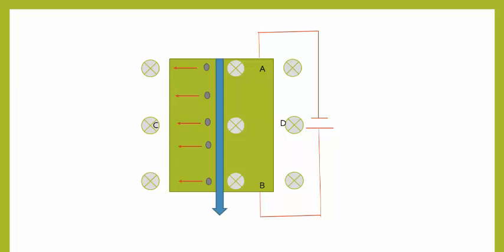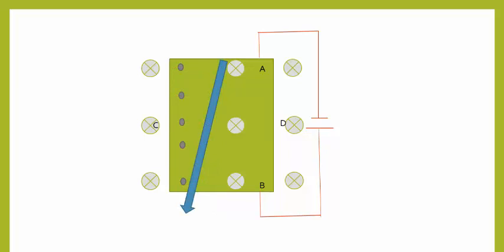The magnetic force on these electrons pushes them towards side C. These arrows represent the direction of magnetic force on these electrons. As a result of this magnetic force, these electrons will start accumulating towards end C. You can see the electrons, which were initially shown in the middle of the conductor, are now accumulated on side C. This accumulation of negative charges on side C produces the effect of positive charge accumulation on side D.